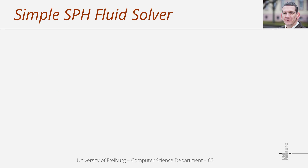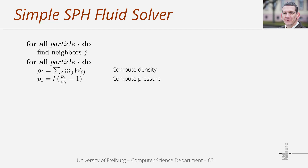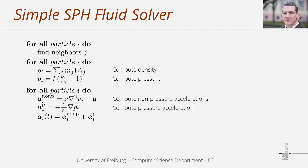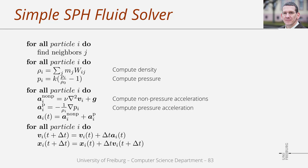Here we have an overview of an SPH fluid simulation. In the first step we search particle neighbors within some distance, which is equal to the support of the SPH kernel function. We need the particle neighbors to compute SPH sums that approximate the particle density and also some particle accelerations. In the next step we prepare the computation of the pressure acceleration that realizes the incompressibility. To detect whether a particle is compressed we compute its density, then compute a pressure value using a state equation. Then we compute the particle accelerations — in this example gravity, viscosity, and the pressure acceleration. Finally we advect the particles, applying the accelerations to update velocities and using the updated velocities to update the particle positions.